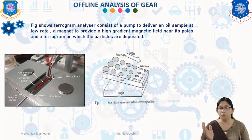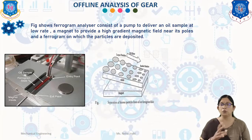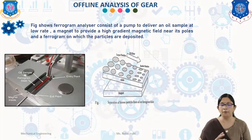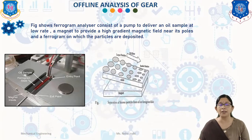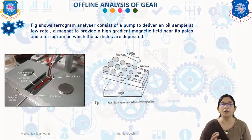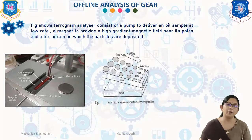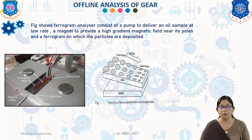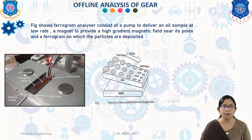Scanning electron microscope (SEM) and energy dispersive spectral analysis are used to detect the size, shape, and material of collected wear particles, by which we can examine and estimate the failure of the gear.